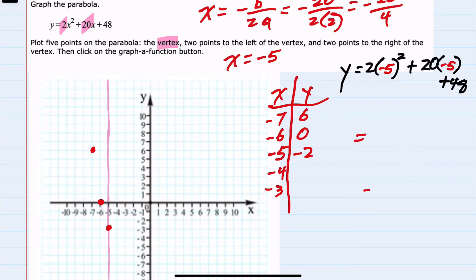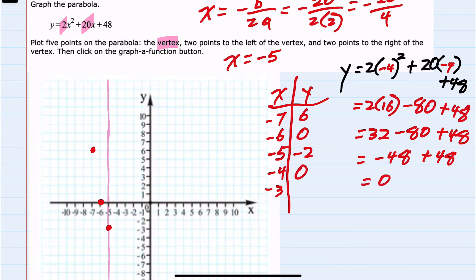The next point is when x equals negative 4. Negative 4 squared is 16, so 2 times 16, 20 times negative 4 is negative 80 plus 48. 2 times 16 is 32 minus 80 plus 48. 32 minus 80 would be minus 48 plus 48 would be 0. This is the value we were expecting since it should be symmetric.